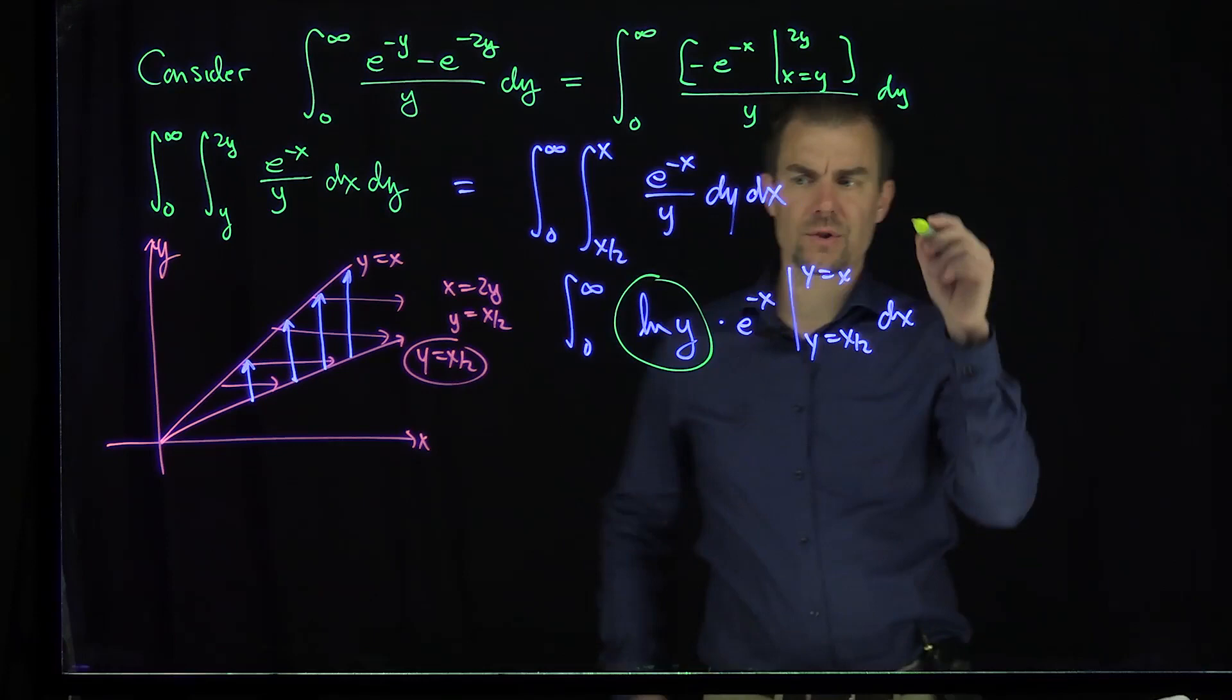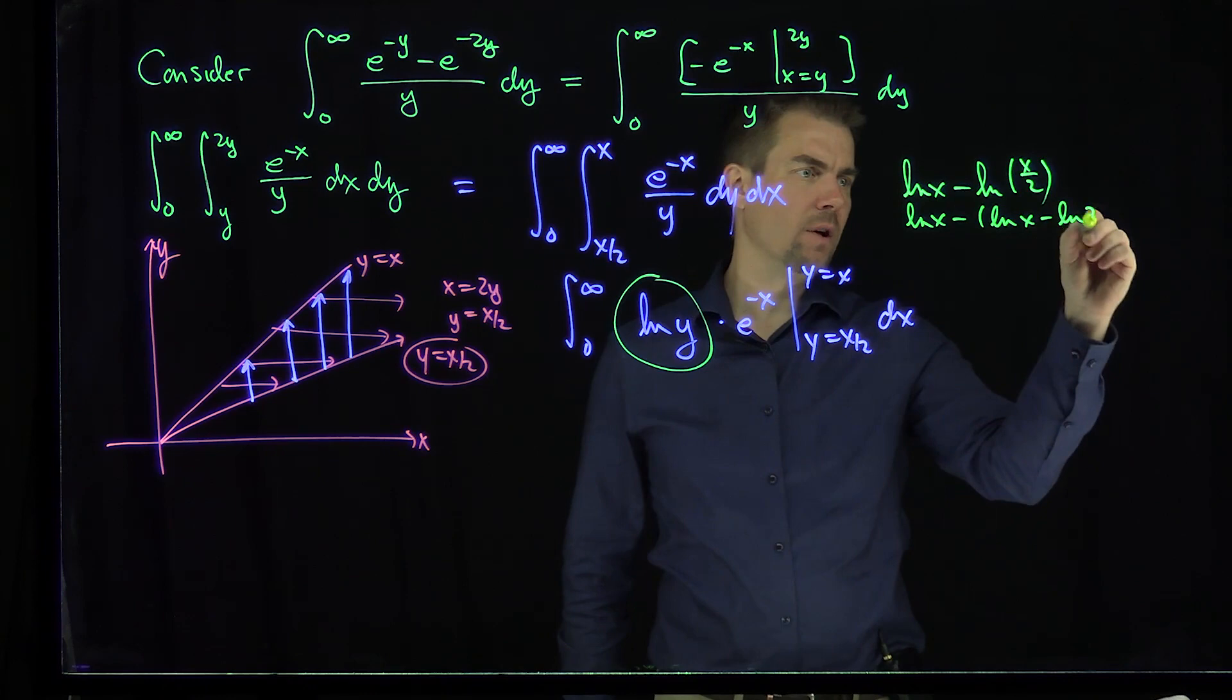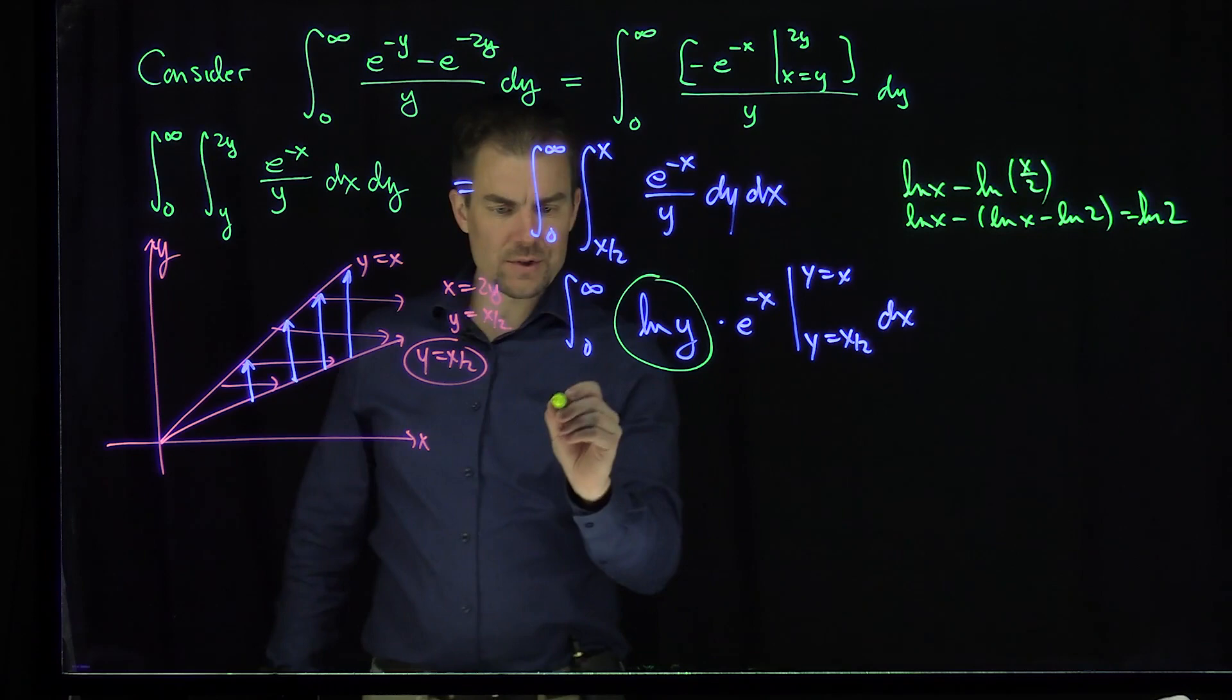And what is this going to simplify to? If I plug in y=x and y=x/2, I'm going to have ln(x) - ln(x/2). Of course, that's just ln(x) - ln(x) - ln(2). So that simplifies to the constant ln(2).